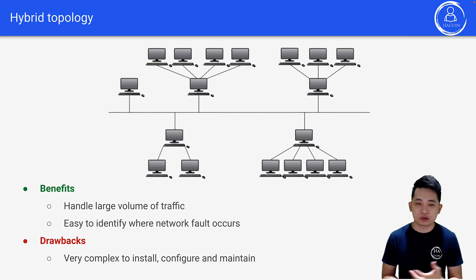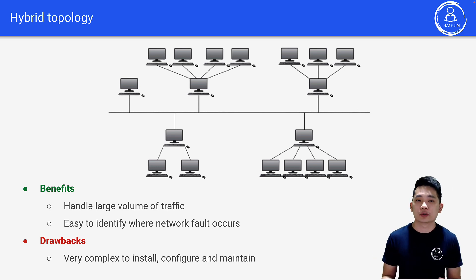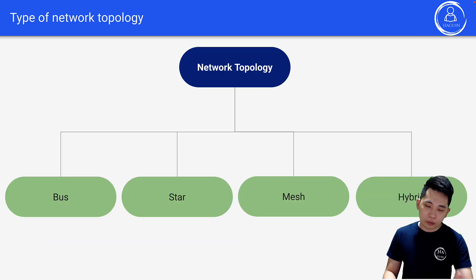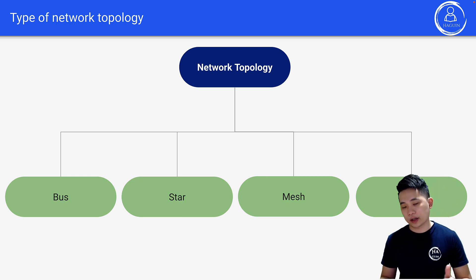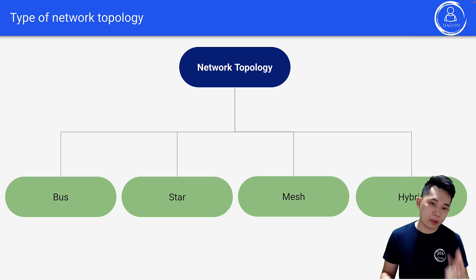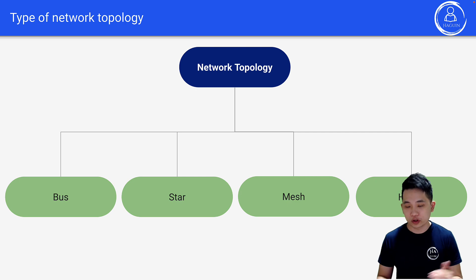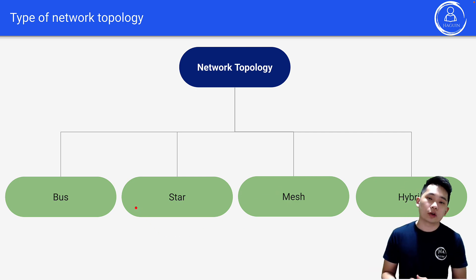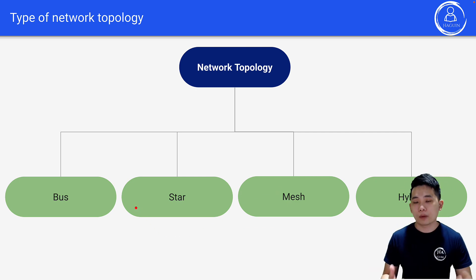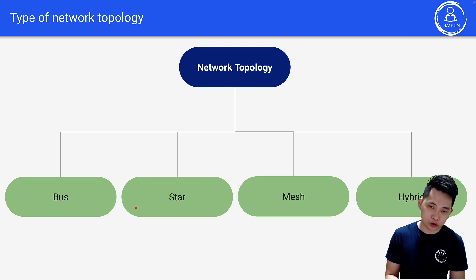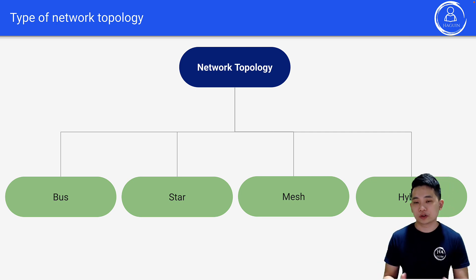In this video we have covered different types of network topology: bus topology, star topology, mesh topology, and hybrid topology, which is a mixture of any of these. If you're interested in learning more about computer science, feel free to subscribe to this channel. See you in a future video!